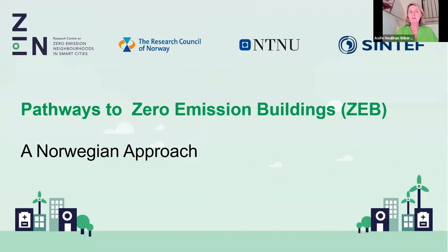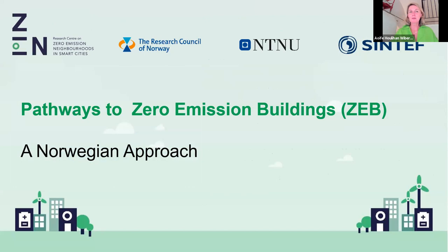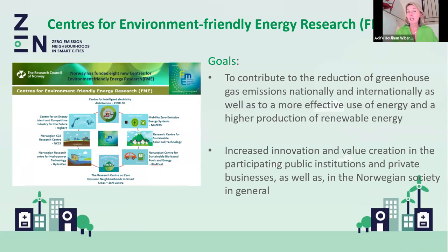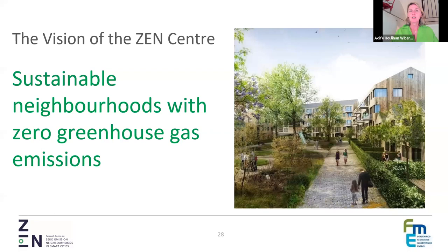The best way to show pathways to net zero is through examples from my own experience in Norway. Norway committed to becoming net zero as a country by 2030 — most countries are aiming for 2050. The Norwegian Research Council provided funding for different research centres around the country in a very coordinated way. The research centre I worked in focused on buildings. Collectively, you need all these different pathways — buildings, infrastructure, and others — to achieve the national goal.